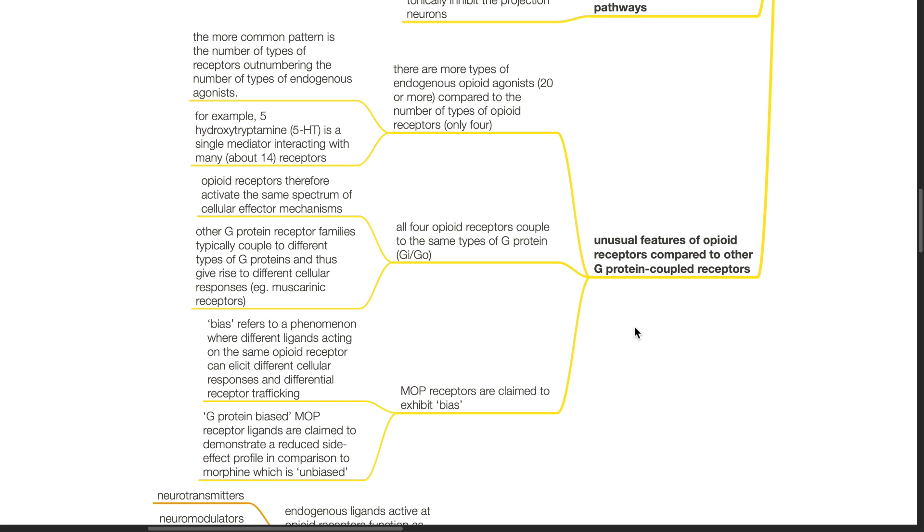The third unusual feature is MOP receptors are claimed to exhibit bias. Bias refers to a phenomenon where different ligands acting on the same opioid receptor can elicit different cellular responses and differential receptor trafficking. G-protein biased MOP receptor ligands are claimed to demonstrate a reduced side effect profile in comparison to morphine which is unbiased.